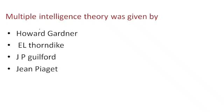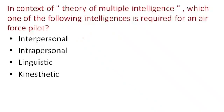Next question: Multiple intelligence theory was given by — Howard Gardner, E.L. Thorndike, J.P. Guilford, or Jean Piaget? The correct answer is Howard Gardner.